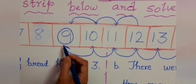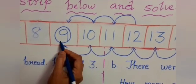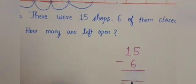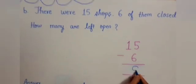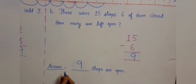So we will reach at 9. So 15 minus 6 is equal to 9. So how many are left open? 9 shops are open.